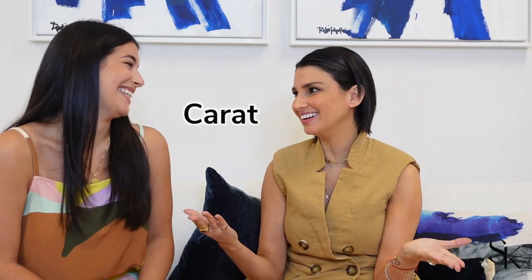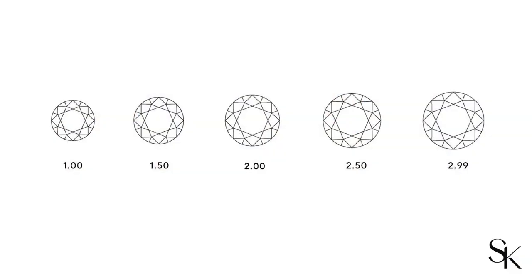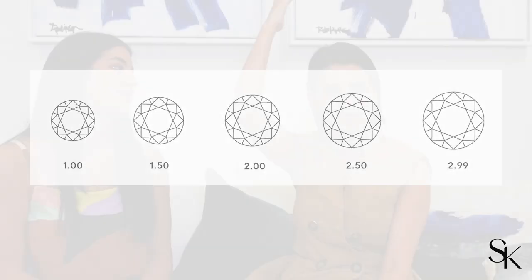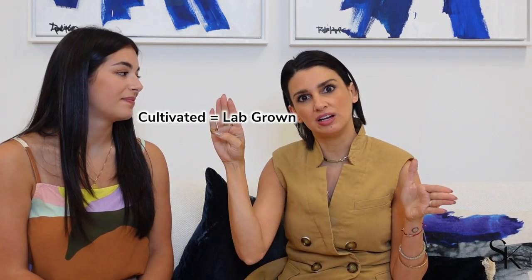The last C is carat. The price jumps drastically in natural stones at one carat, one and a half, two, two and a half, three, four, and five carats. For cultivated stones right now, pricing is pretty linear until about three carats, and then we're seeing big jumps — though I expect that to go down over time as well.